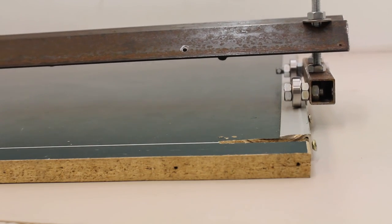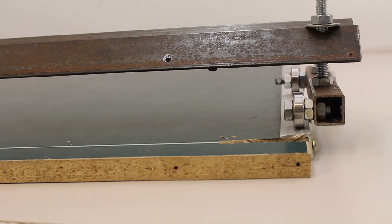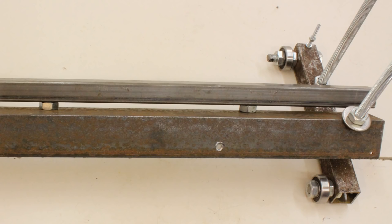At the opposite edge of the base plate, the carriage is running on a flat aluminum bar. Both halves are connected through a compound made of an angle profile and a square tube.